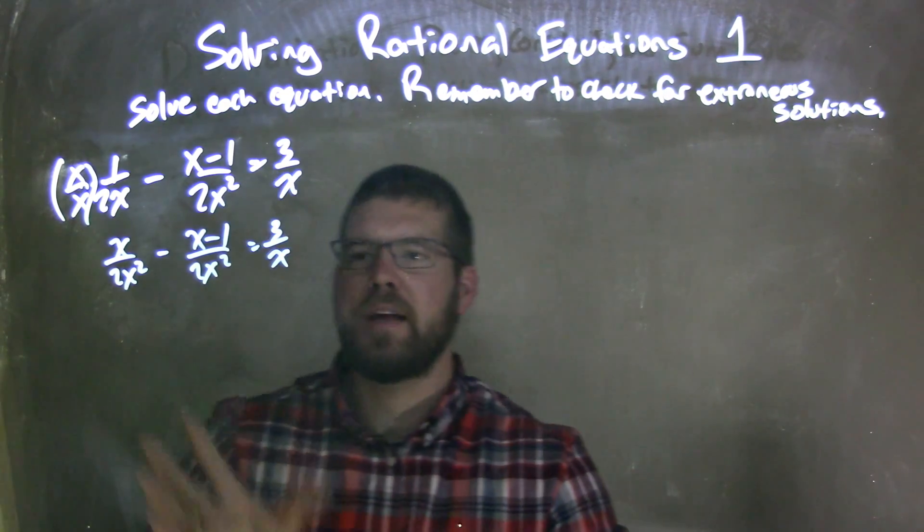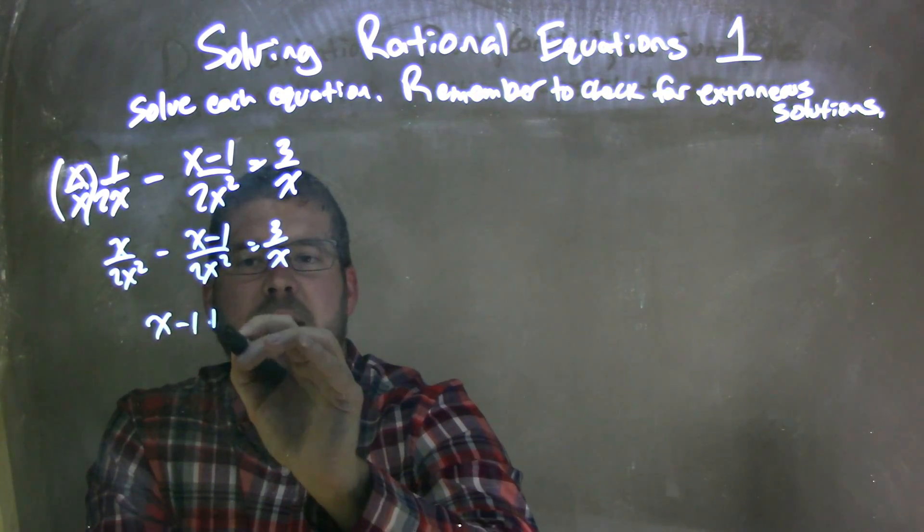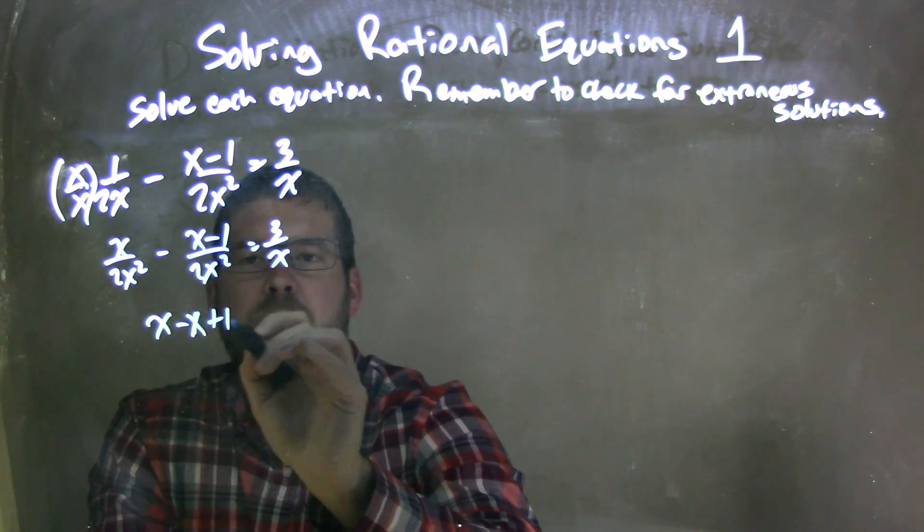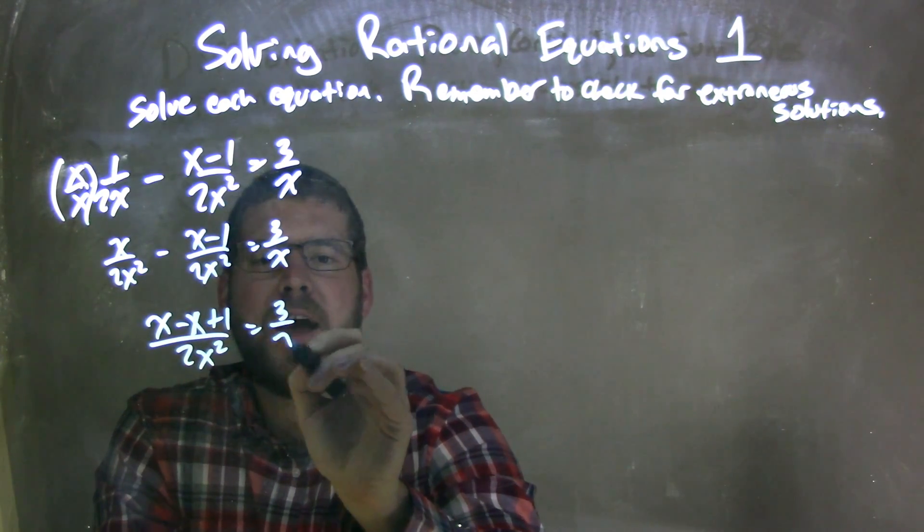Since I have the same base now, I can combine the fractions, I can subtract them. So I have x minus x minus 1, which with the minus sign gives me a plus. So we have x plus 1, and that's all over 2x squared, and that's equal to 3 over x.